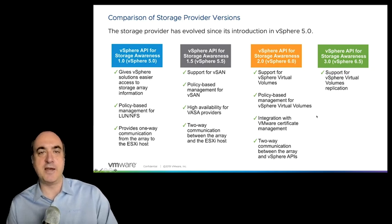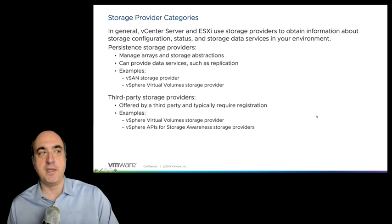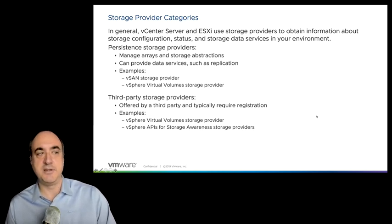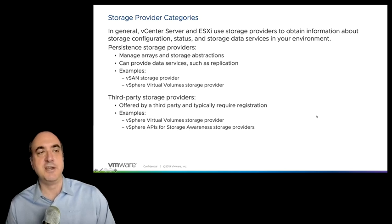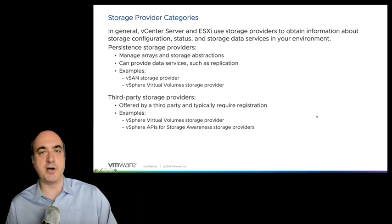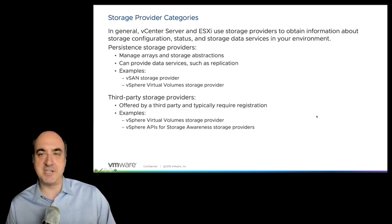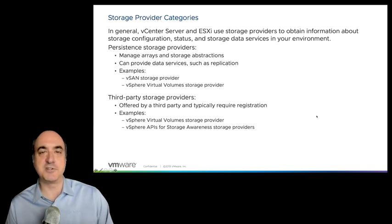With VASA 3.0, we now have support for array-based replication for virtual volumes — a powerful feature introduced in vSphere 6.5. There are different categories of storage providers: some provide data services, others provide information about the array. For example, does the array offer its own replication, offloading of snapshots, or encryption? The virtual volume storage provider is an example of the array providing this information. There may also be data services provided for vSAN — the vSAN storage provider can provide those characteristics as well. Storage providers may come from VMware internally (vSAN storage provider) or from third-party vendors, typically the array storage vendor for virtual volumes.